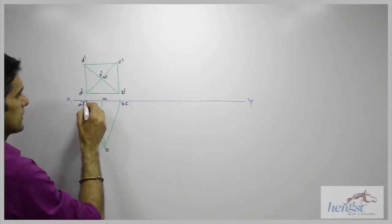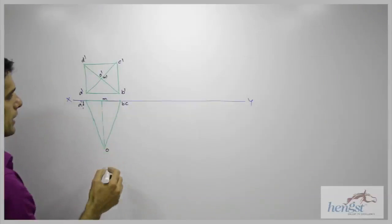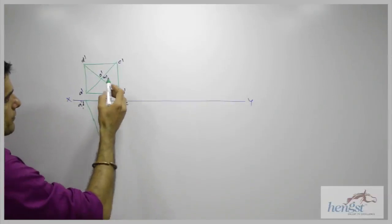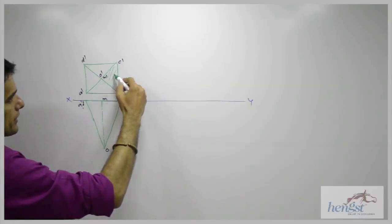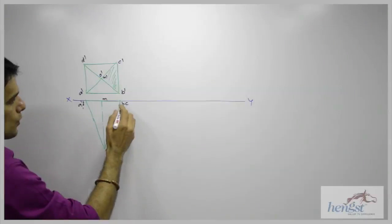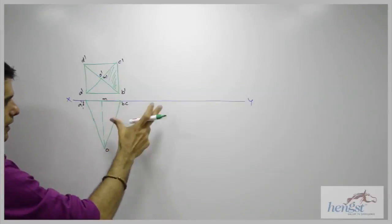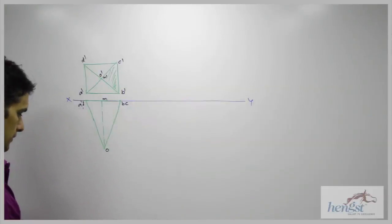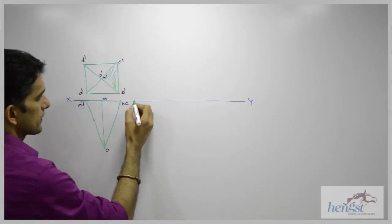So we have assumed that it is resting on VP. Now it is resting on one of its triangular face. So it is resting on this triangular face. So what we will do, we will take this length and we will draw it on x by y.